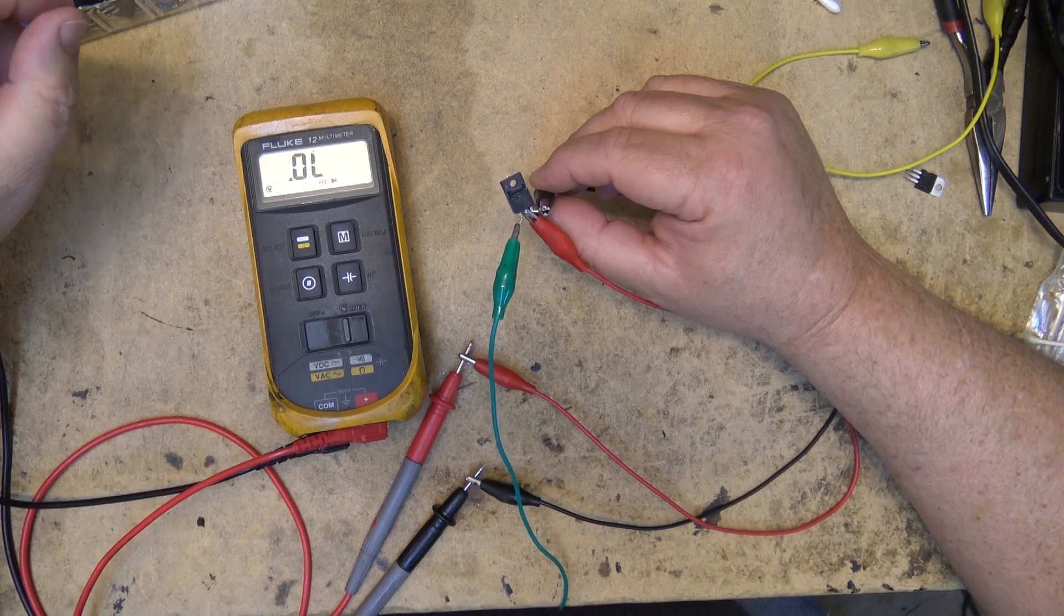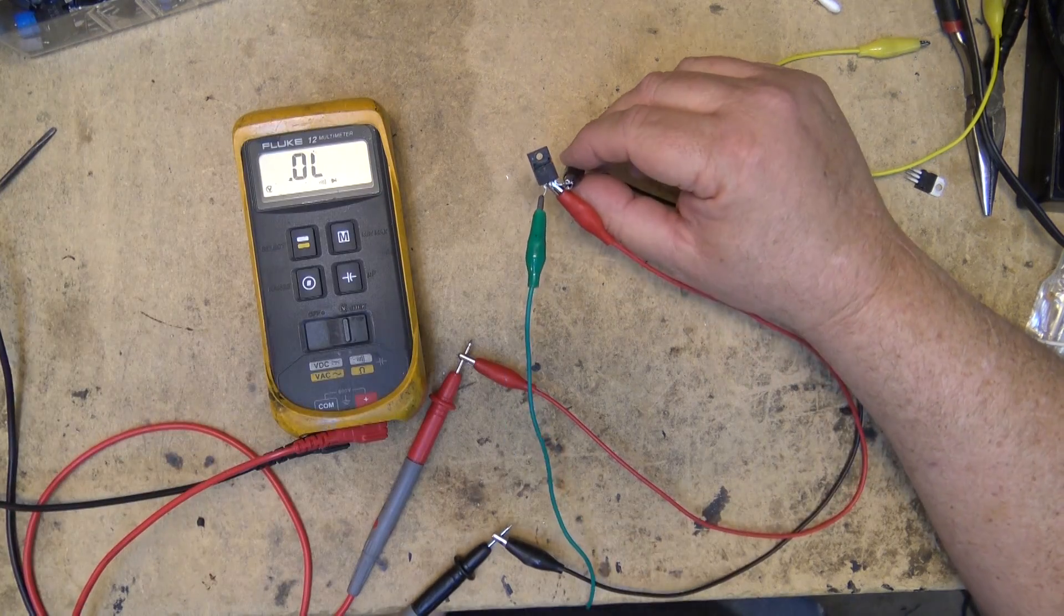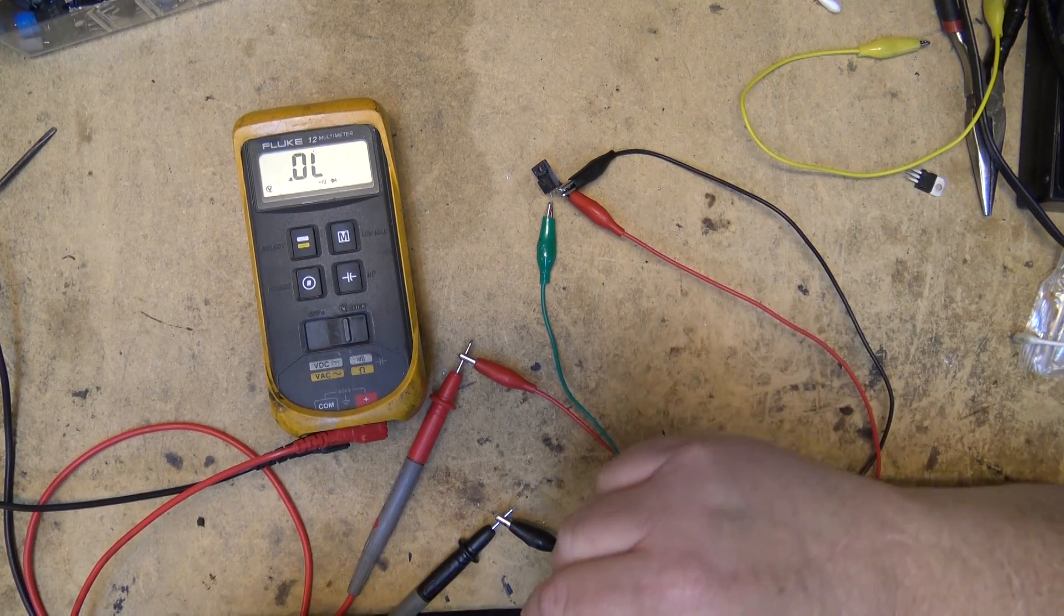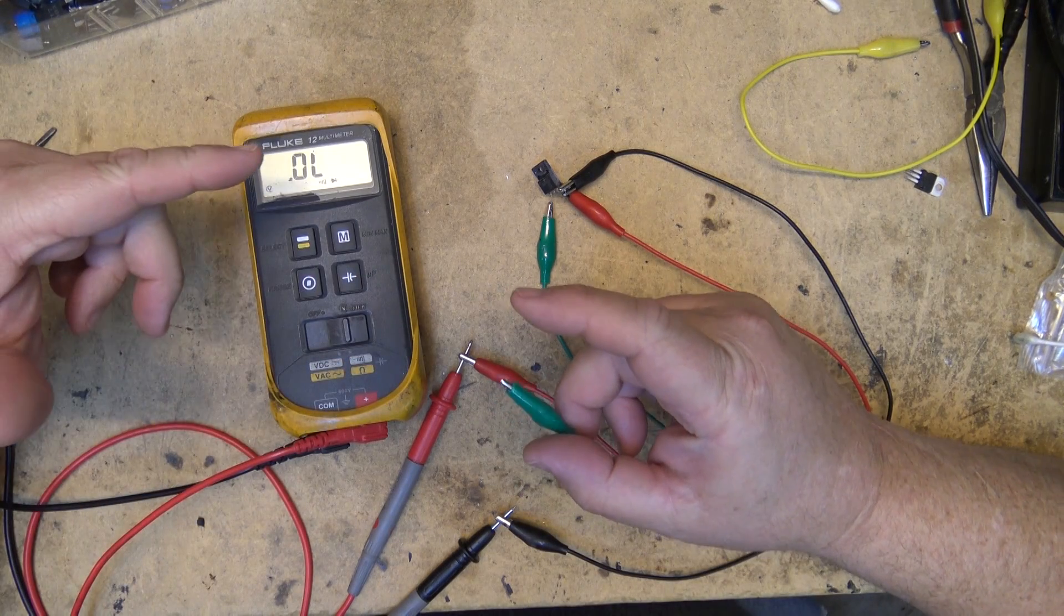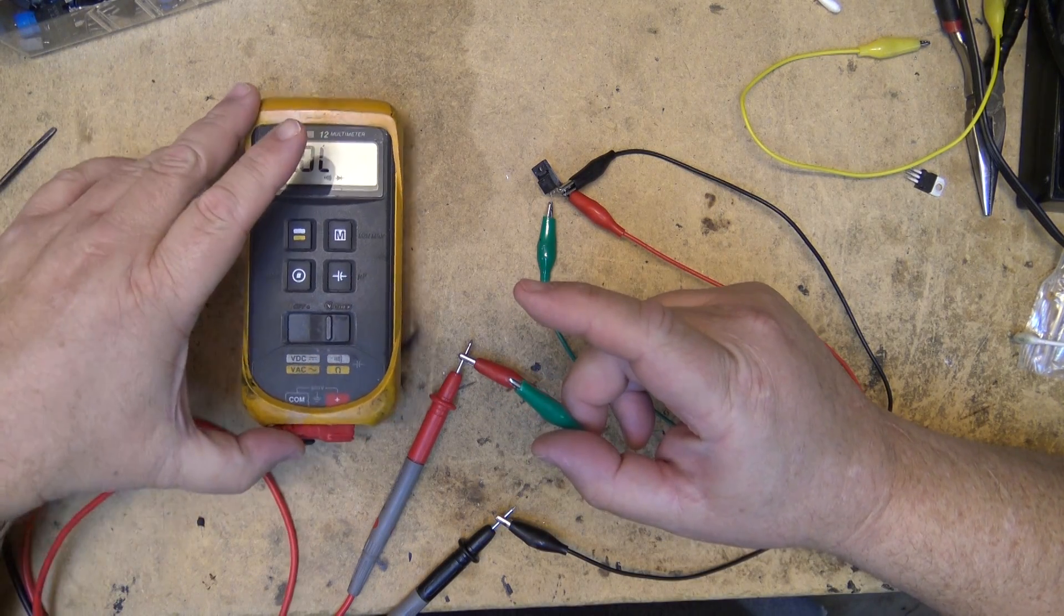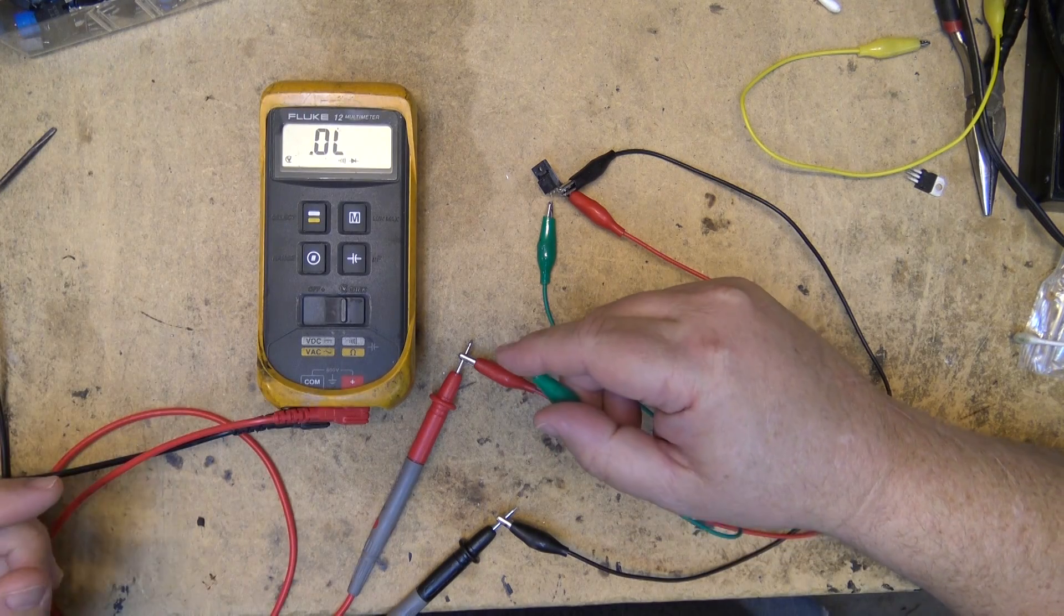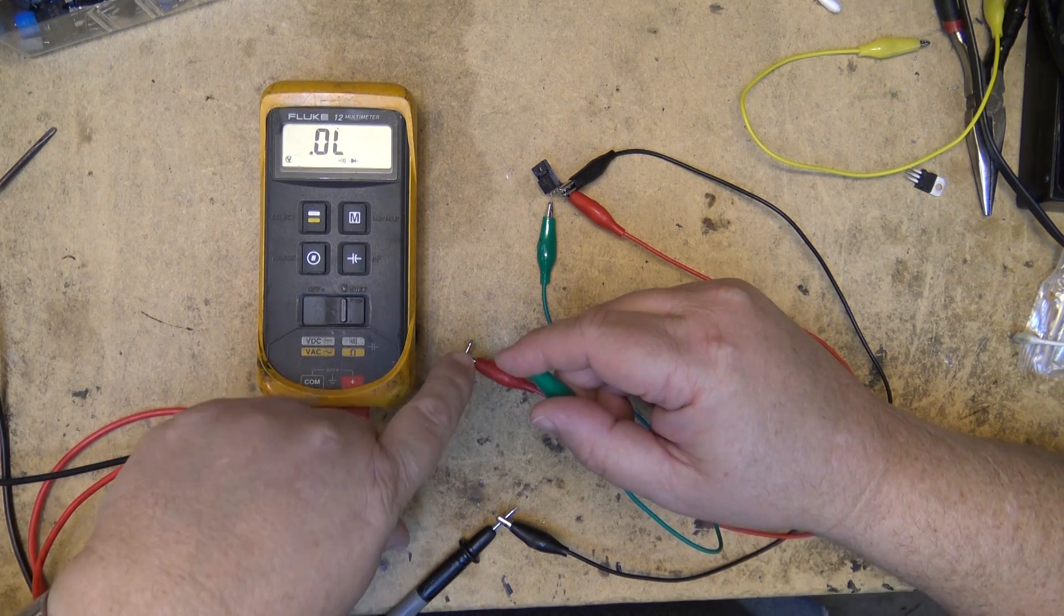This being a high impedance device, I can just use skin resistance conductivity to test this device. If I put my finger on the green gate and I take my other hand and touch it to the positive terminal, we'll see that the device should turn on.